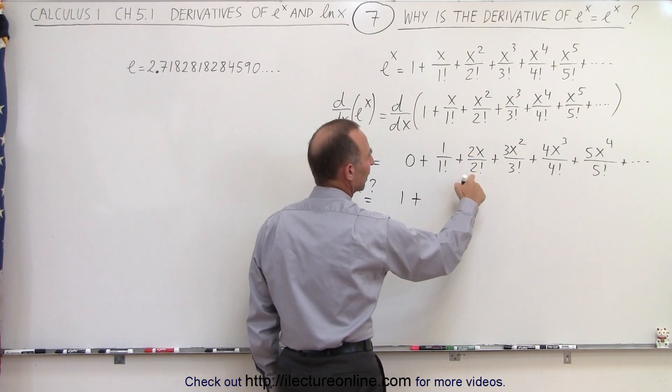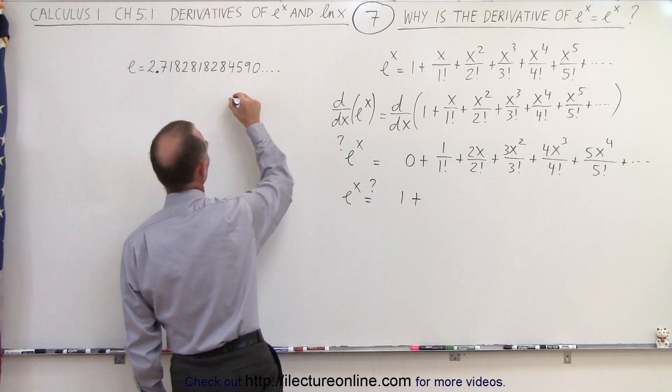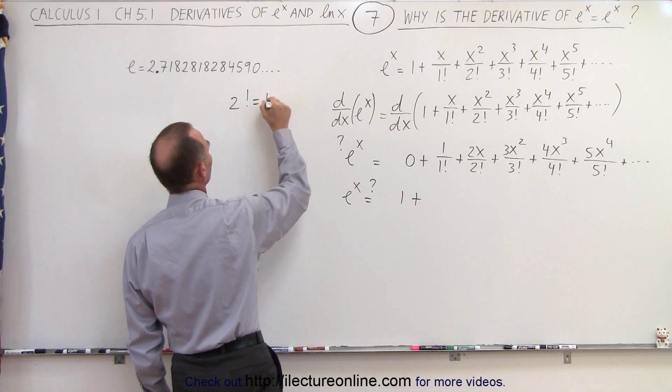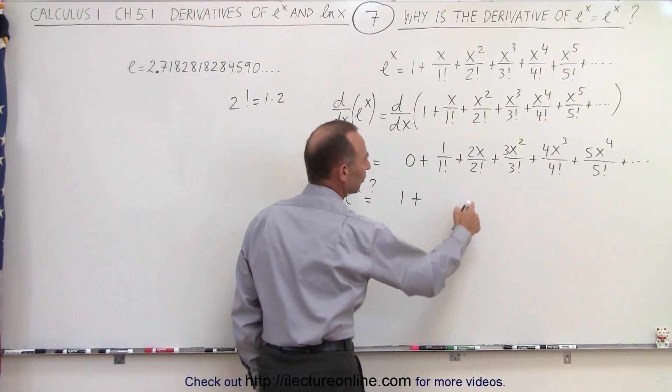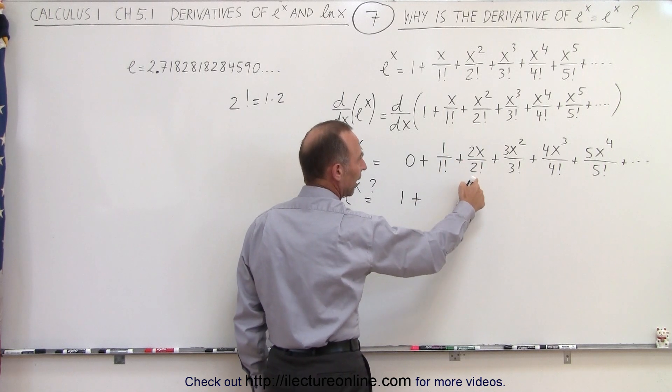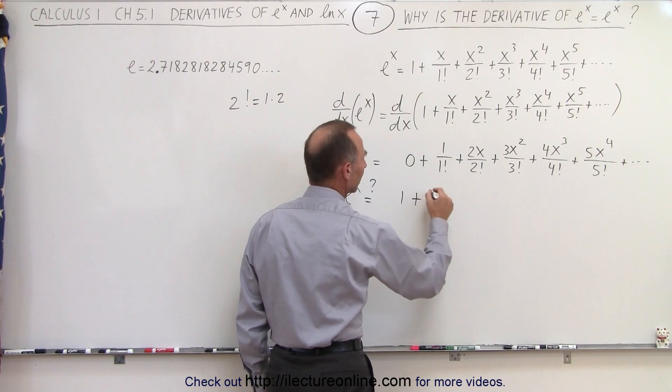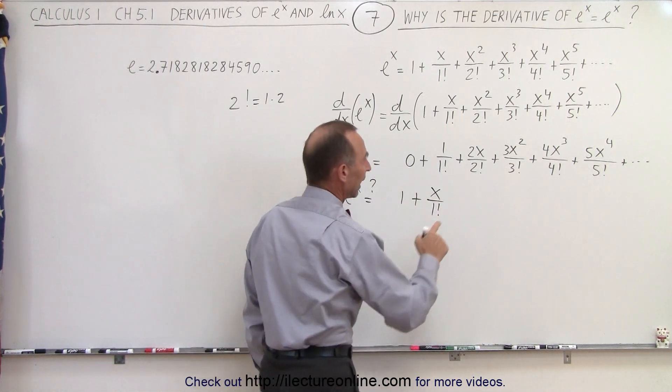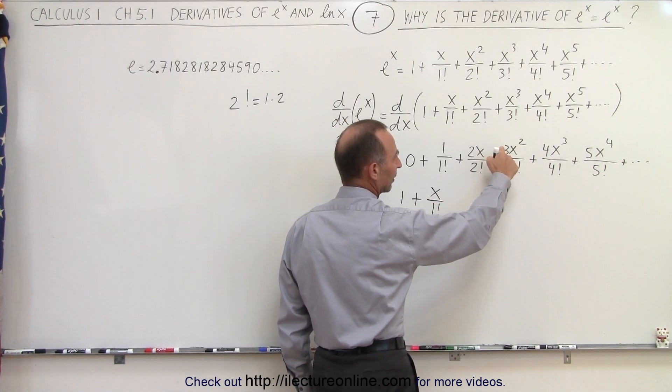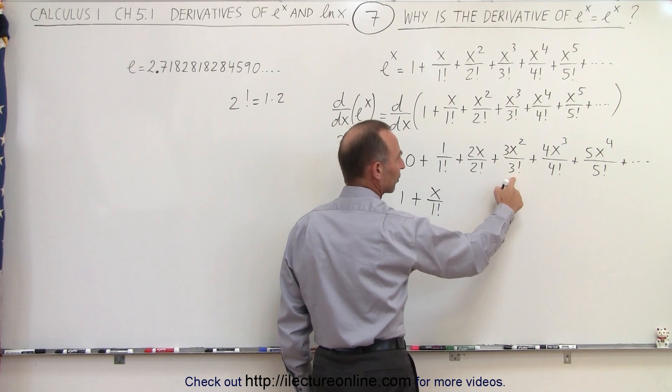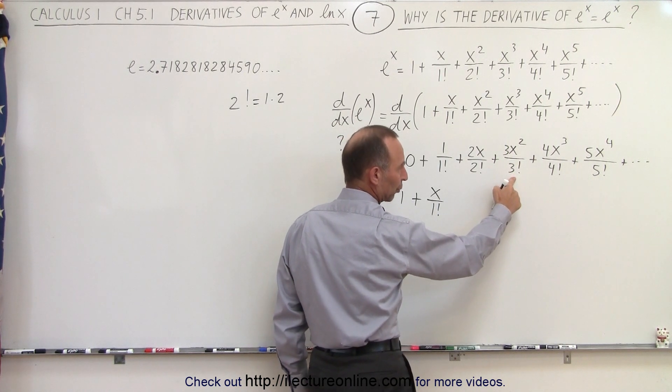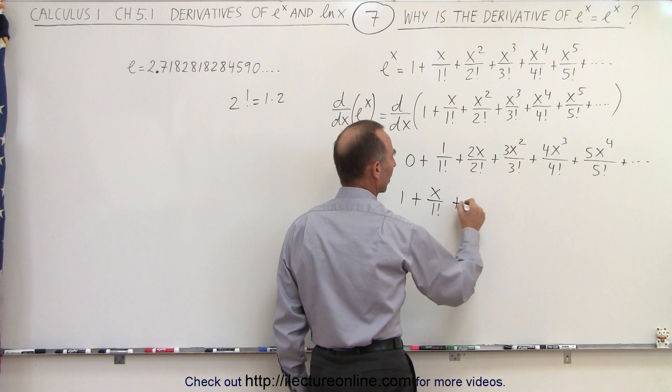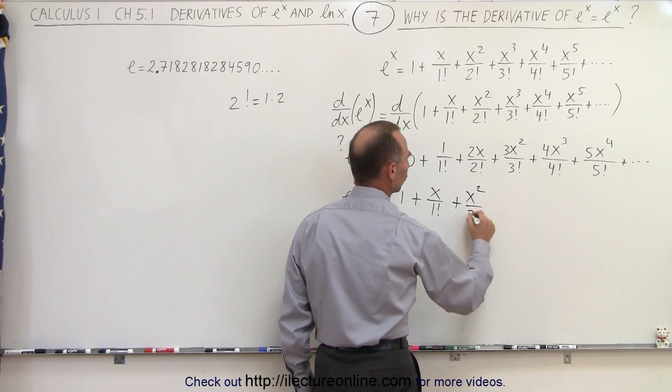Here the 2, remember that 2 factorial is 1 times 2. So if we divide the numerator and denominator by 2, we simply get x divided by 1 factorial. And then here, we divide the numerator and denominator by 3, which leaves us with 2 factorial in the denominator, so this becomes x squared divided by 2 factorial, plus...